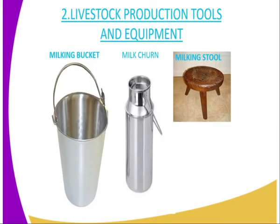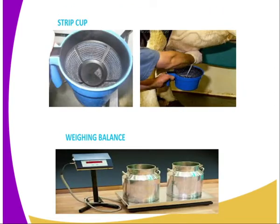In livestock production, there are several tools and equipment that we normally use. The first one, we have the milking bucket, which is used when milking activities are carried out. Then we have the milk churn, which is used to store the milk or to transport the milk to the dairies. You can put your milk in the milking churn. Then we have the milking stool — that is where the milking man sits when milking activity is being done.